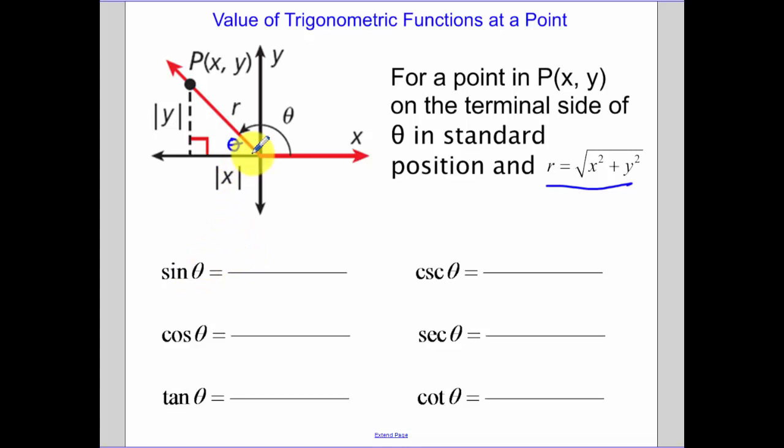So the sine of theta, remember, opposite over hypotenuse, so that's y over r. The cosecant of theta is the reciprocal of that. The cosine is adjacent over r. Secant is the reciprocal. Tangent is y over x, and cotangent is x over y, the reciprocal.